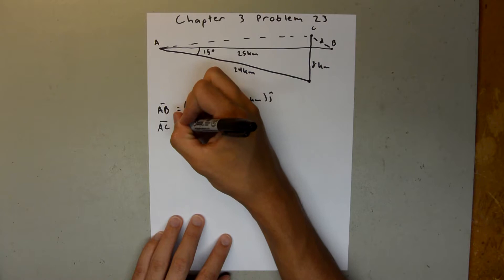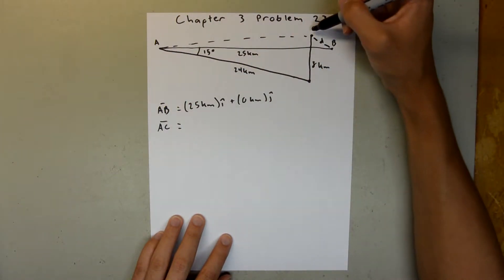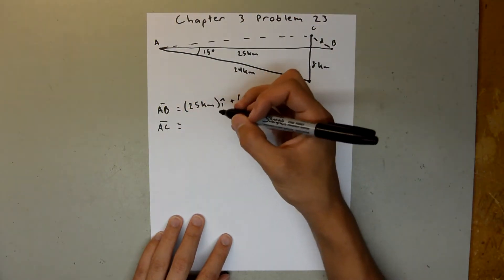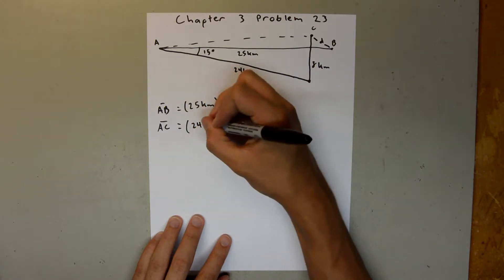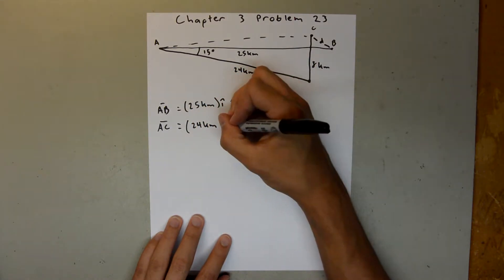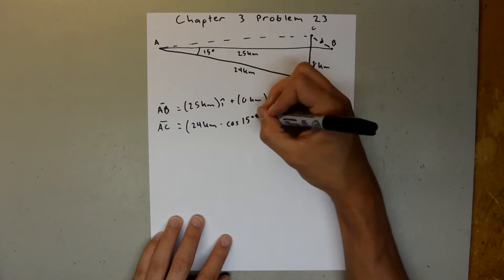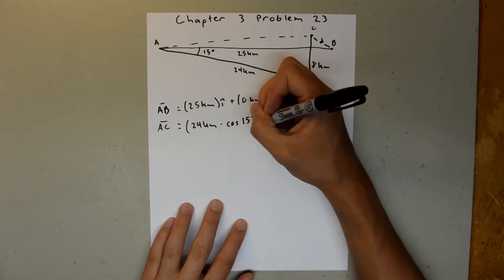So, AC, what we can do is we can find the resultant vector of this vector and this vector here, and that will give us this vector. So, AC is going to be equal to, we have 24 kilometers times the cosine of 15 degrees, make sure your calculator is in degree mode, I hat, I hat, that's for the X component.